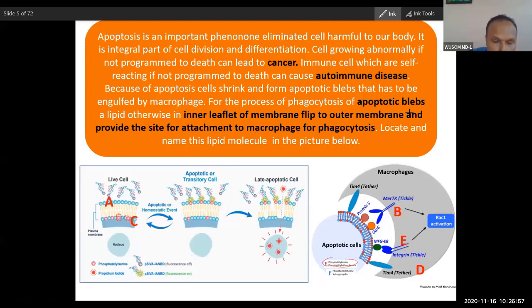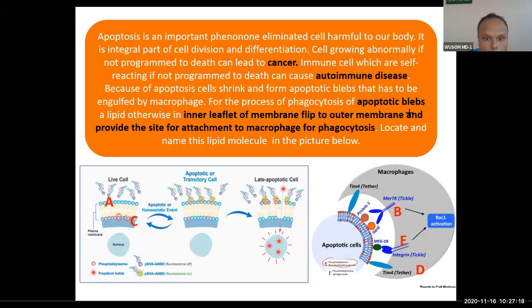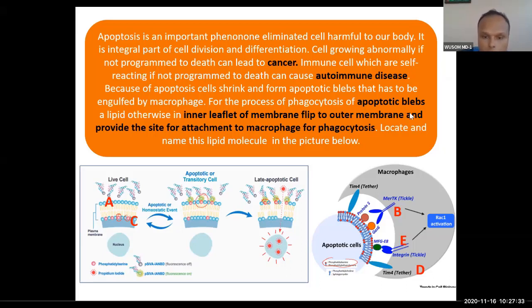You can see the flipping of this lipid. Normally it flips to the outer membrane but returns to the inner leaflet under normal conditions. However, in apoptotic conditions, it is permanently shifted to the outer membrane. This phosphatidylserine provides the attachment site for macrophages and helps in engulfment of the apoptotic bleb. Remember, phosphatidylserine is a key lipid involved in apoptosis.